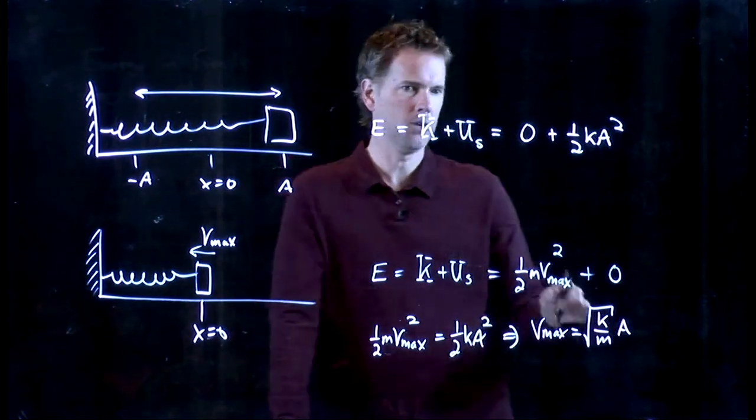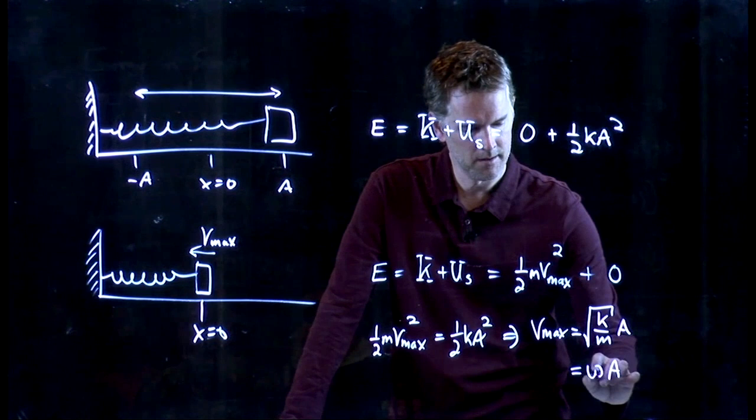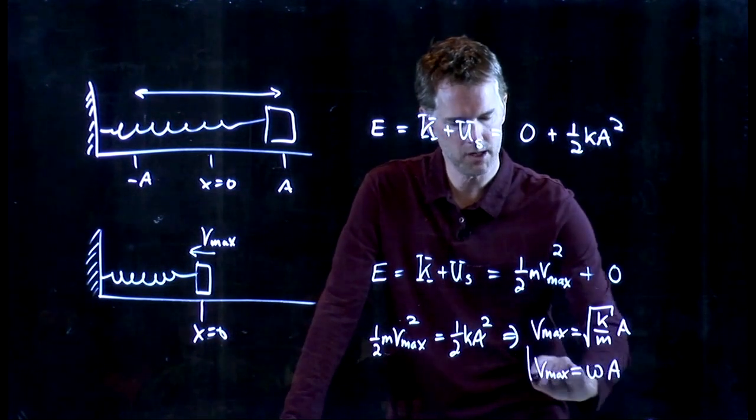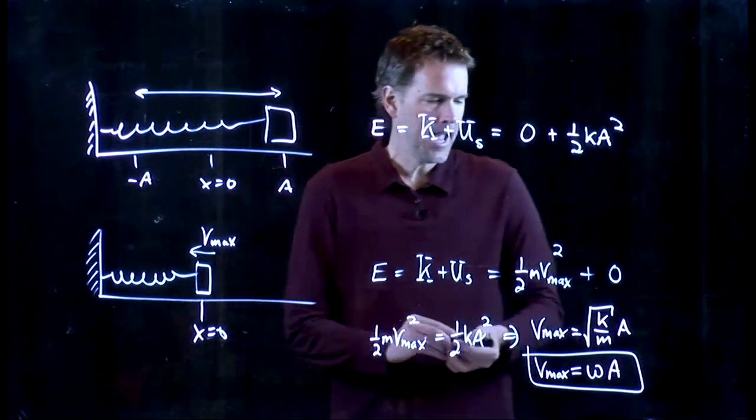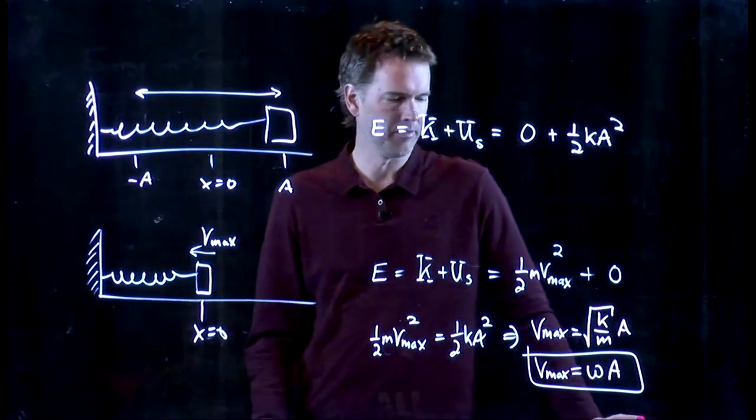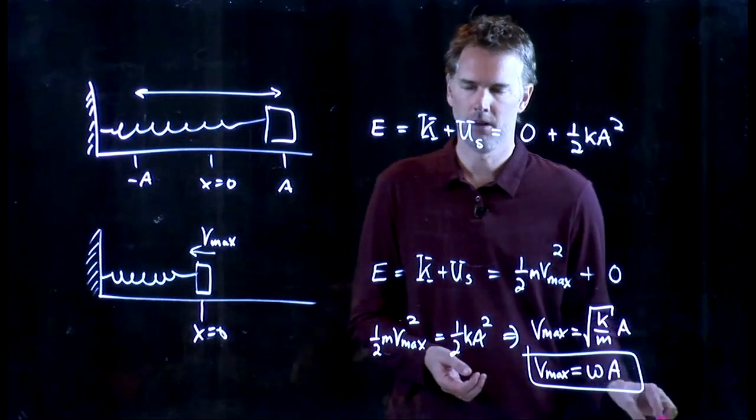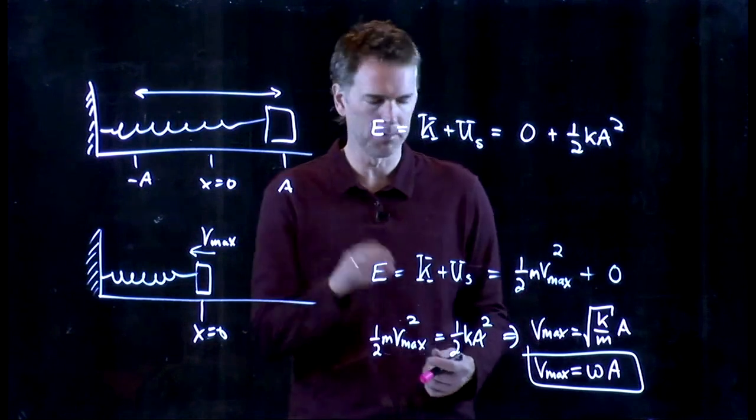But we already knew this because this is just omega. And when we wrote down the equation for V, we said it was negative omega a times the sine of omega t plus phi. And the biggest that sine can be is 1. So what's the maximum speed? Omega times a. Everything that's multiplying that sine.